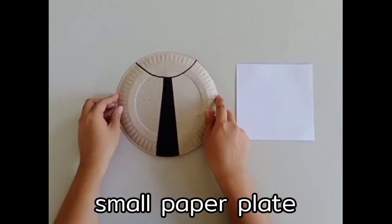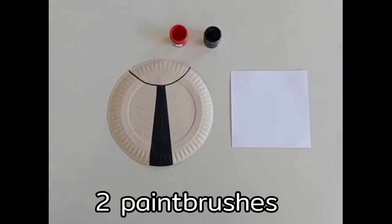For our materials we will need a small paper plate, red and black poster paint, two paintbrushes, water in a small bowl, glue, cutout eyes, and black circles.